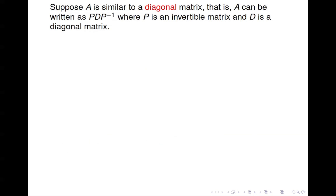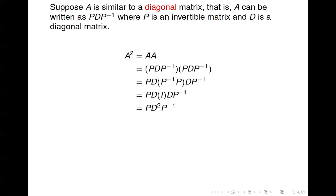Let's suppose that A is similar to a diagonal matrix — that is, A can be written as PDP inverse, where P is invertible and D is a diagonal matrix. What does that get you? Look at what happens when you compute A squared. A squared is A times A. When we substitute PDP inverse in for A, we group the P inverse times P together in the middle, giving the identity matrix. So we get PD times the identity times DP inverse, which is PD squared P inverse.